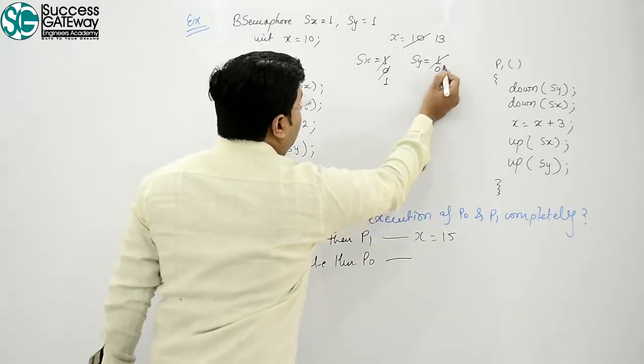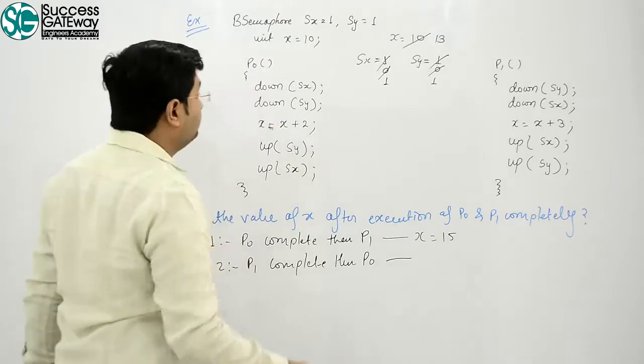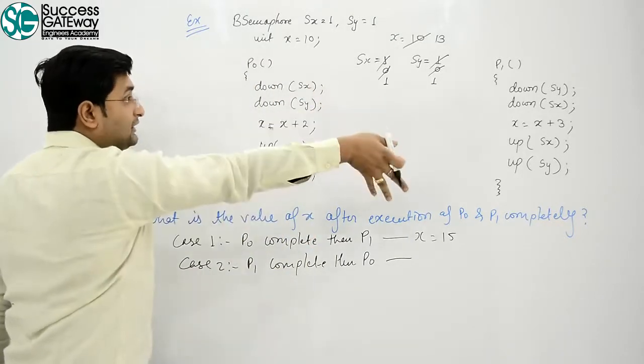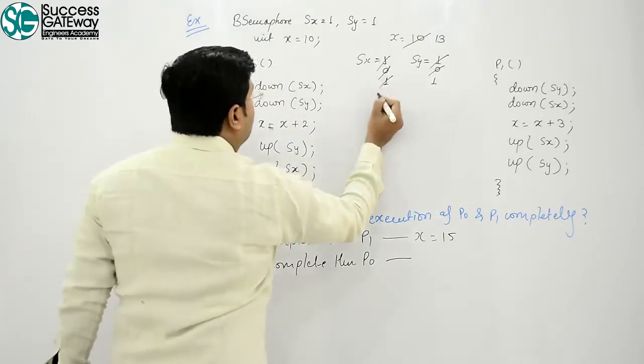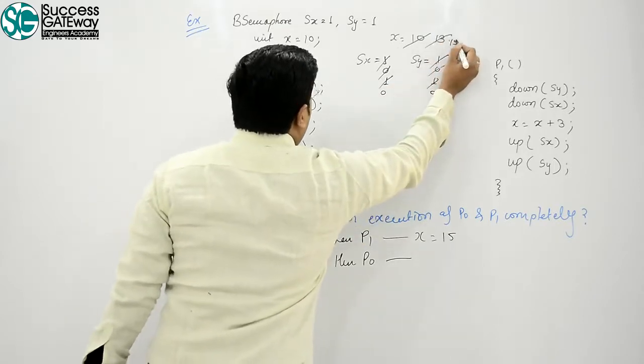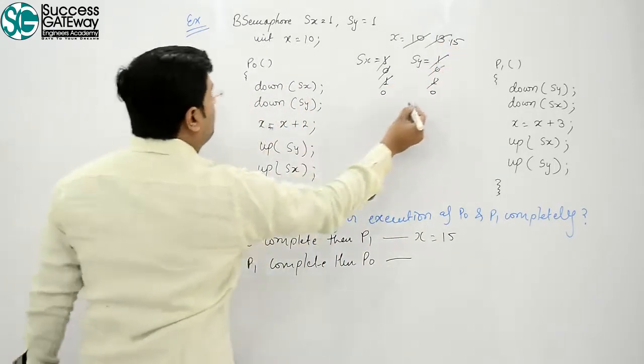After this P1 ran, P0 runs. Both down, down. Then x value becomes 15.